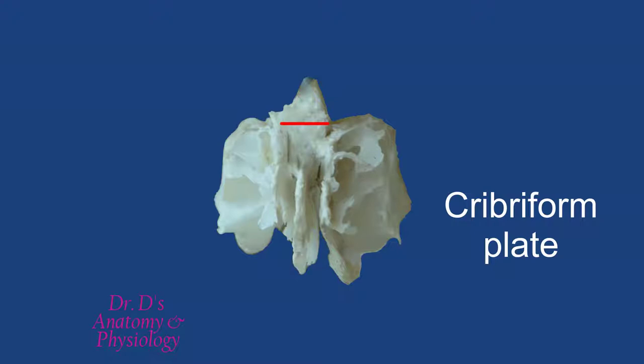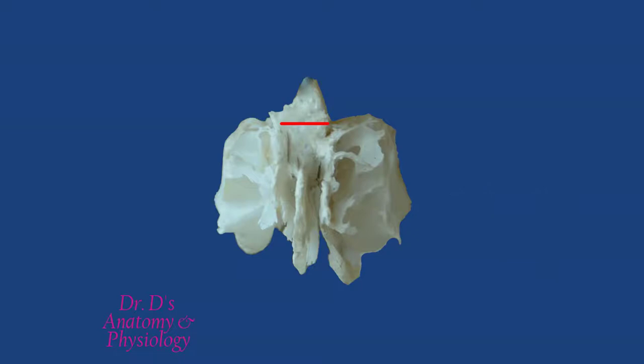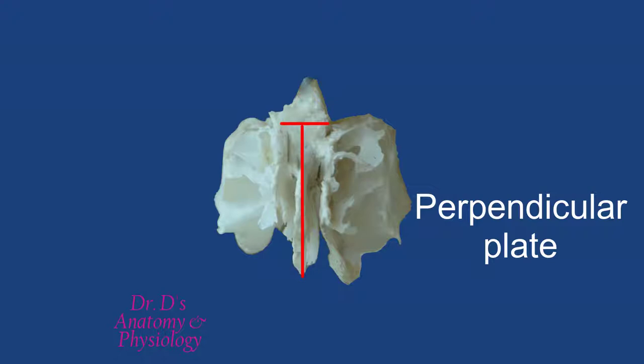We have our horizontal plate, and perpendicular to it there is a perpendicular plate, which is very appropriately named. The perpendicular plate is going to contribute to the formation of the nasal septum — the wall that separates the nasal cavity into two separate compartments.